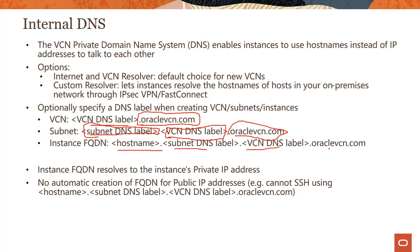One thing to keep in mind: there is no fully qualified domain name for public IP addresses. So for example, if you want to do SSH with hostname.subnetname.vcnname.oraclevcn.com, that feature is not supported. I believe it's on the roadmap, but right now the instance fully qualified domain name resolves only to the instance's private IP address.